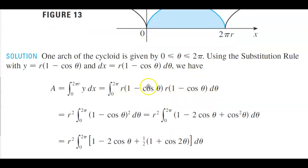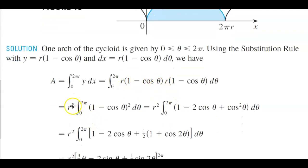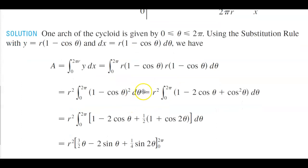We factor out r times r = r squared, giving r squared times the integral from zero to two pi of (1 minus cos theta) squared d theta. Expanding that as a perfect square trinomial, we get one minus two cos theta plus cos squared theta, d theta.